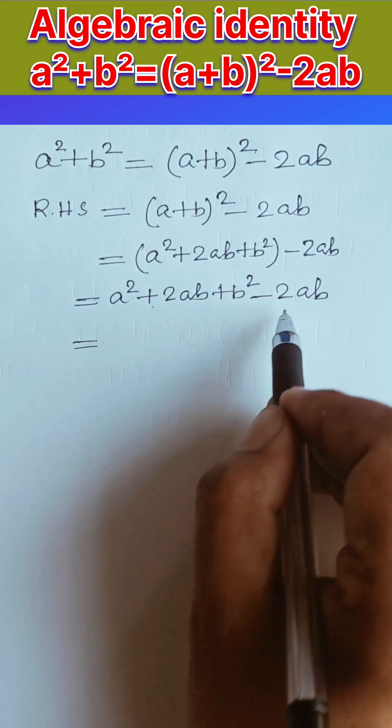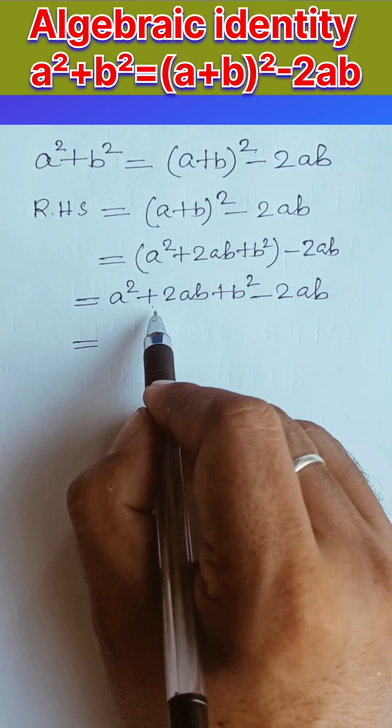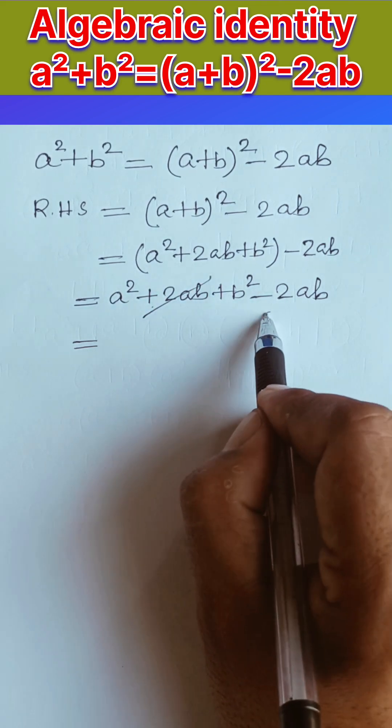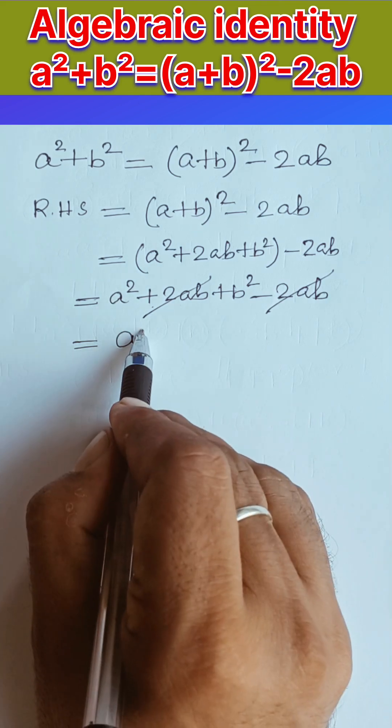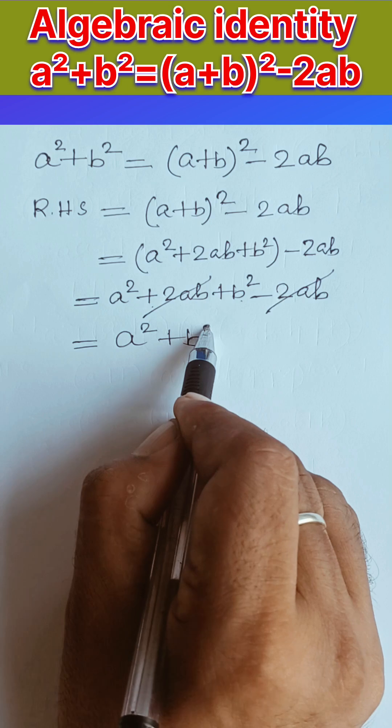a² + 2ab and - 2ab, they are like terms, opposite sign, so they are cancelled with each other. What is left is a² here plus b² and this is nothing but my left hand side.